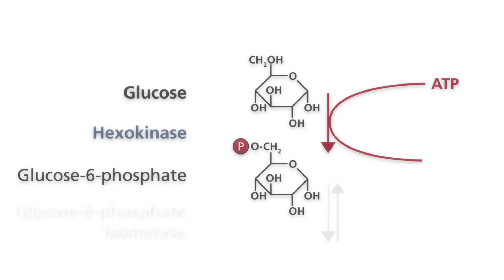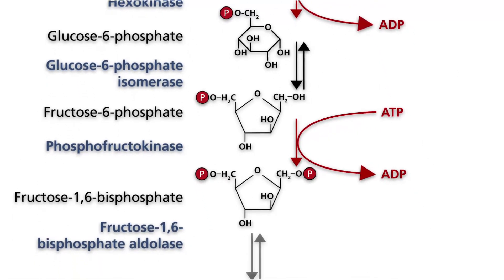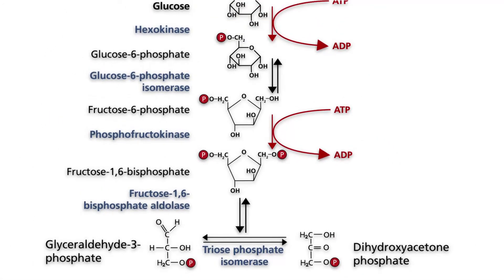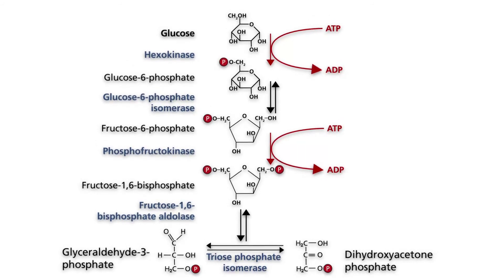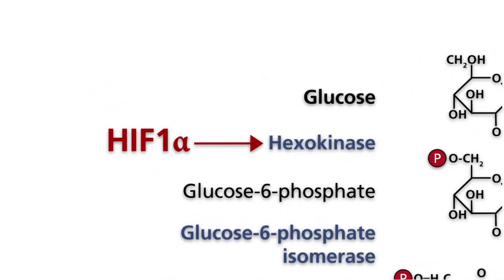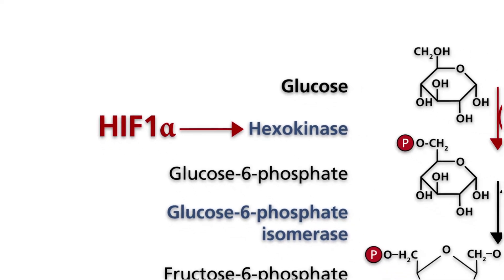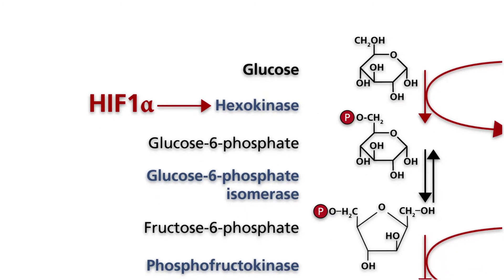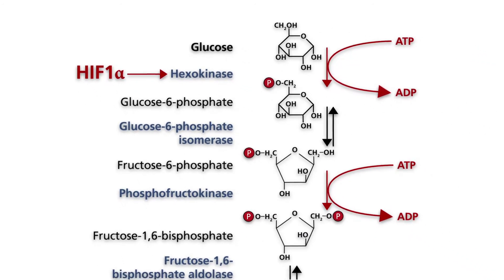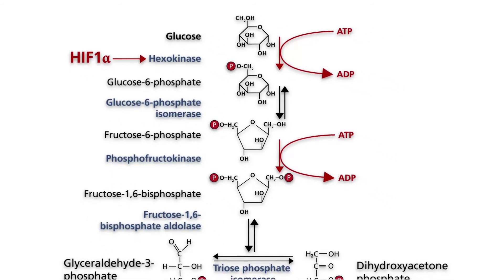Here, the first steps of glycolysis and the respective enzymes are shown. HIF-1-alpha stimulates the synthesis of hexokinases 1 and 2. Hexokinase is one of the key enzymes in the glycolytic pathway. Because of its low Km value, the glucose that has entered the cell is very rapidly phosphorylated. Under physiological conditions, the reaction is irreversible.